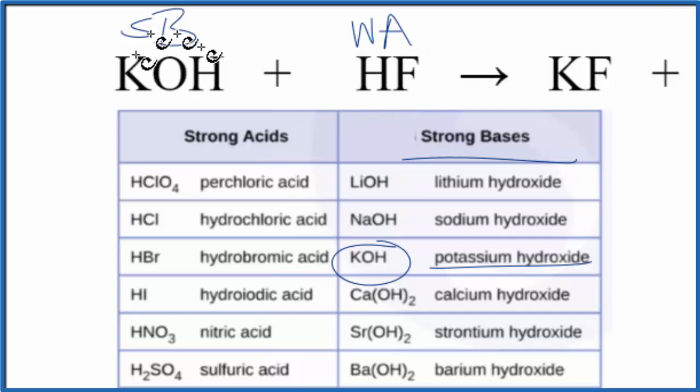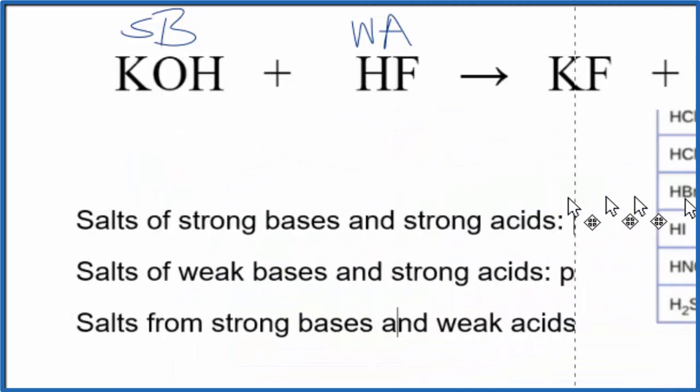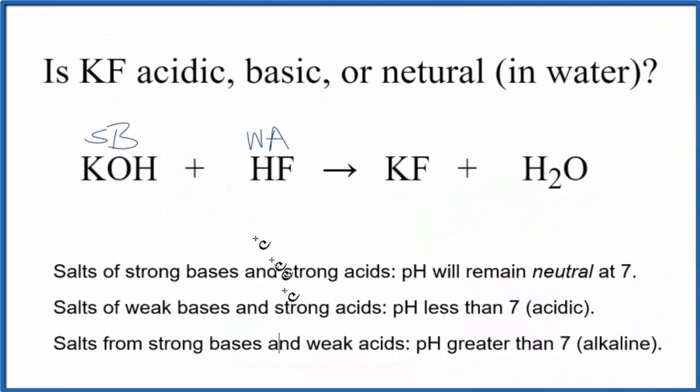So we know the strength of our base and our acid. Now we can use our rules to figure out whether KF is acidic, basic, or neutral when it's in water. We have a strong base and a weak acid. Strong base, strong acid. Here we go.